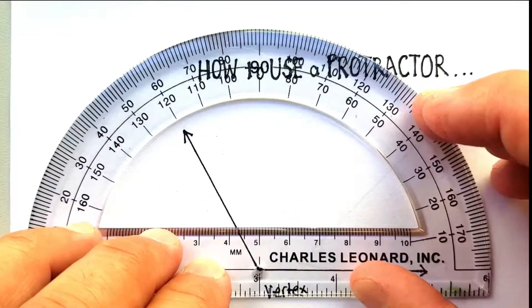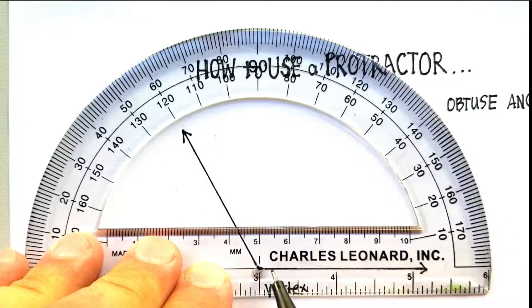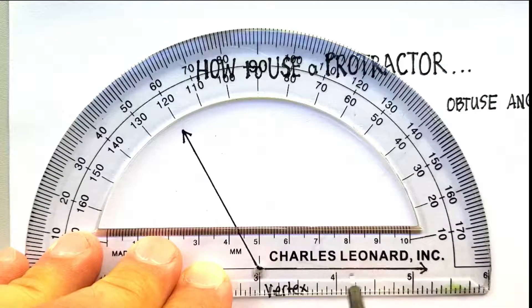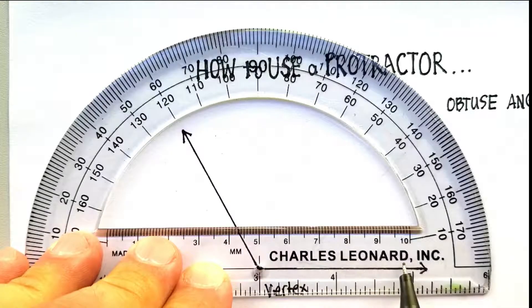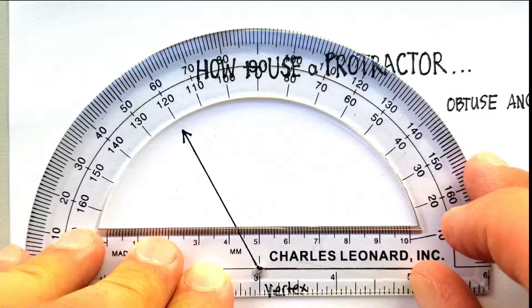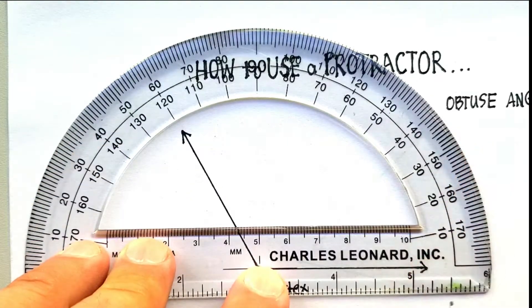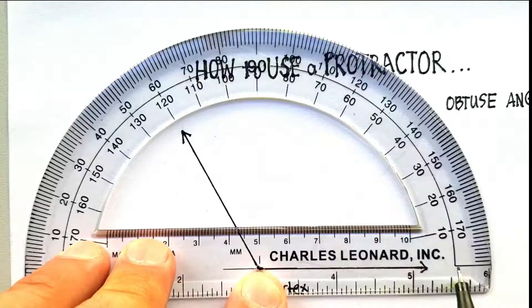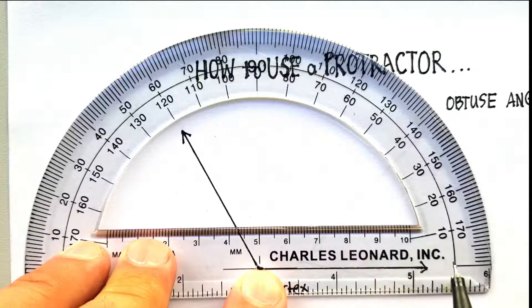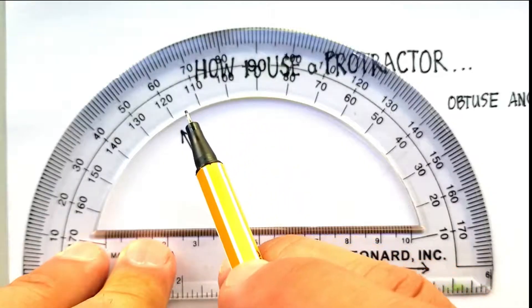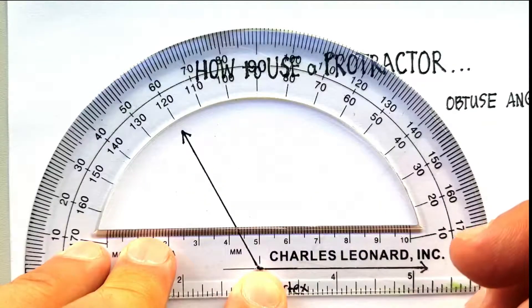Now, once you've got it there, you want to line up this line with one side or one ray of the angle. Why do you want to do that? Well, basically, you are lining it up with the zero portion by doing that. And so, you can actually read the angle measurement going around in that direction.